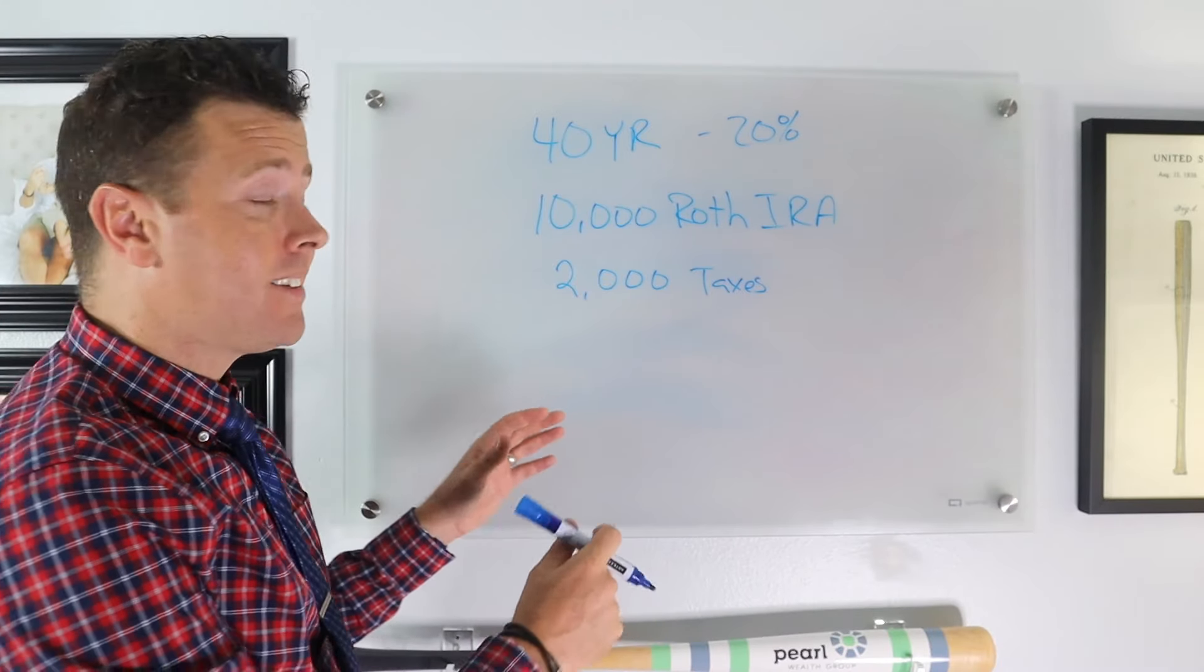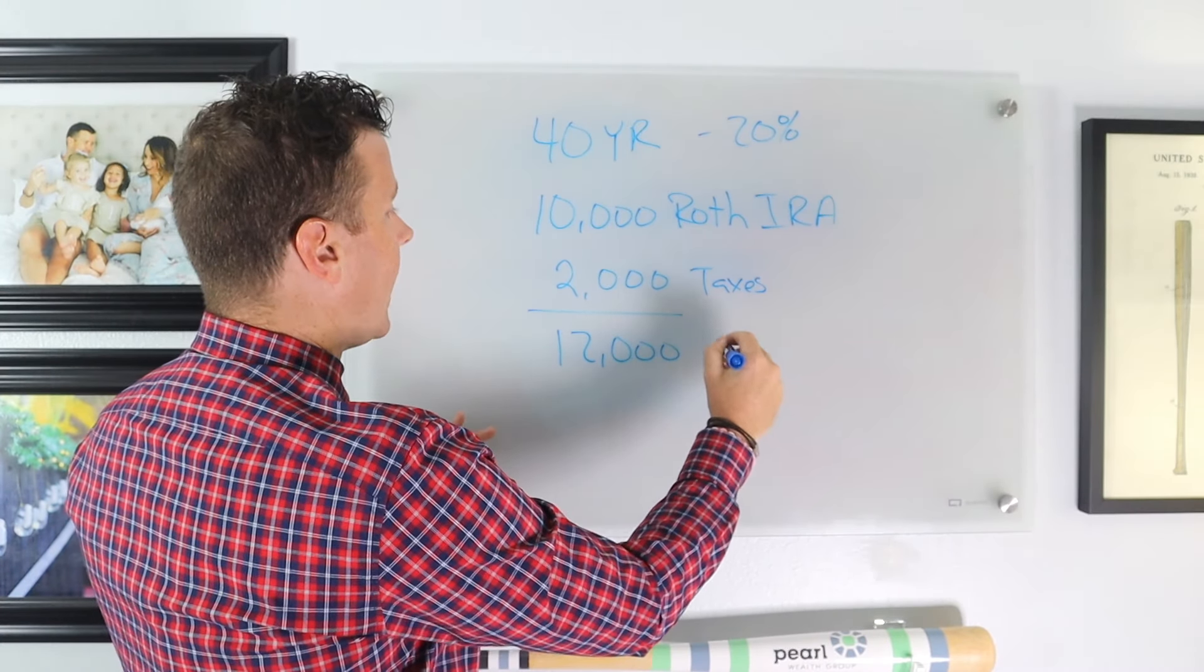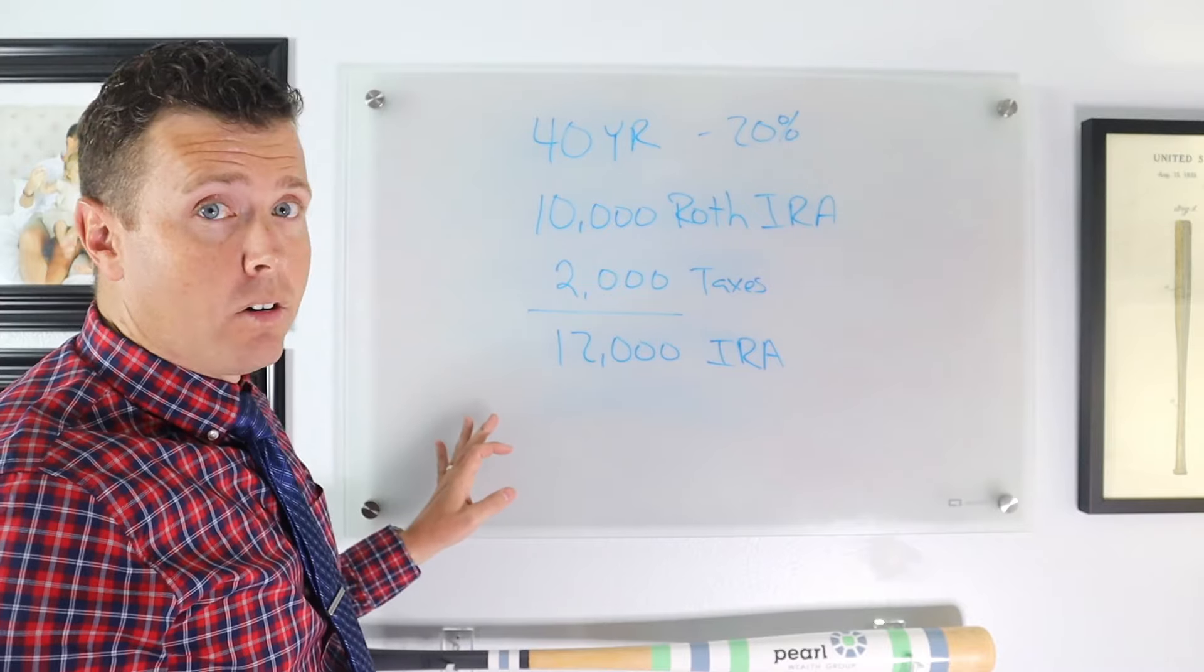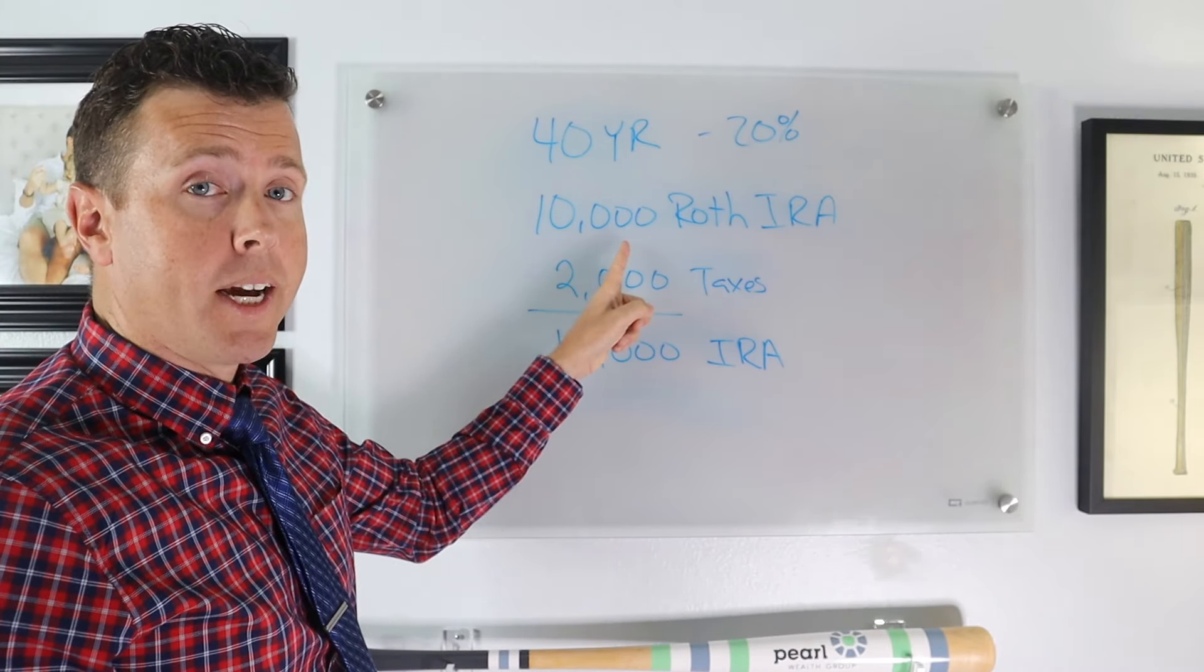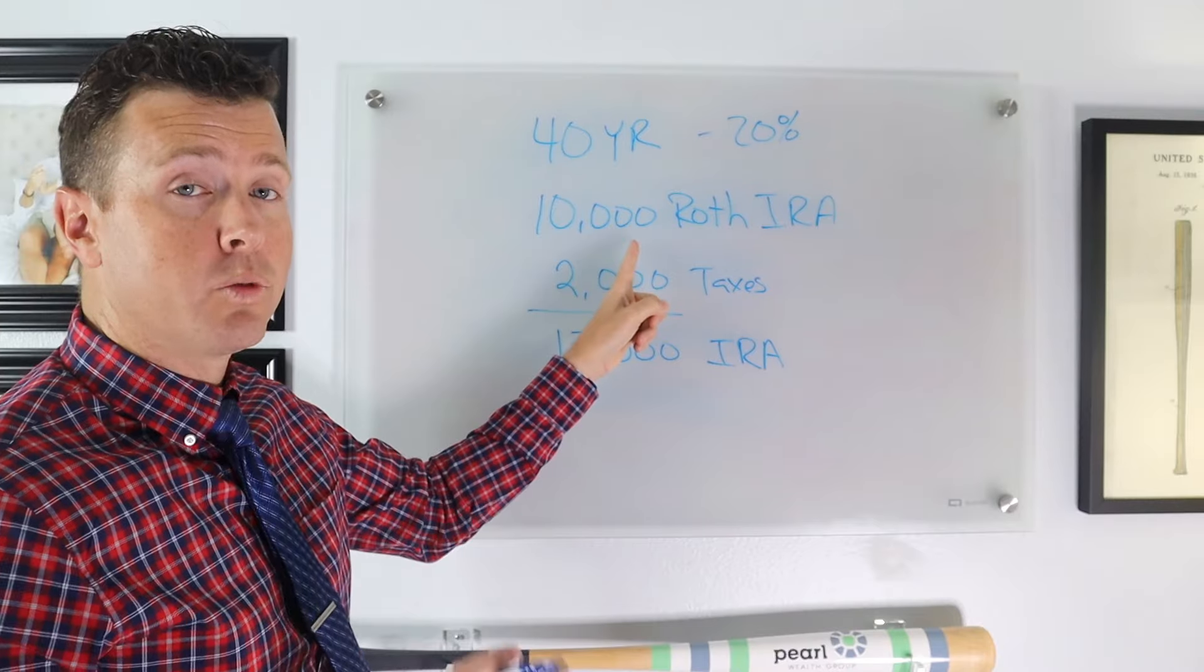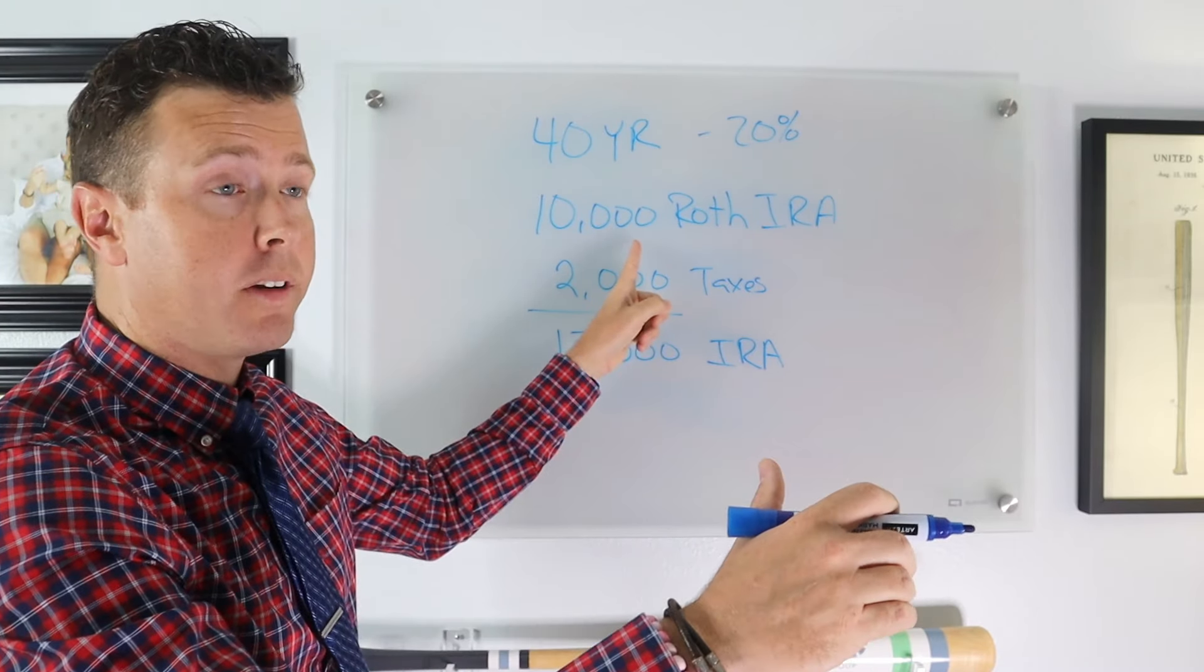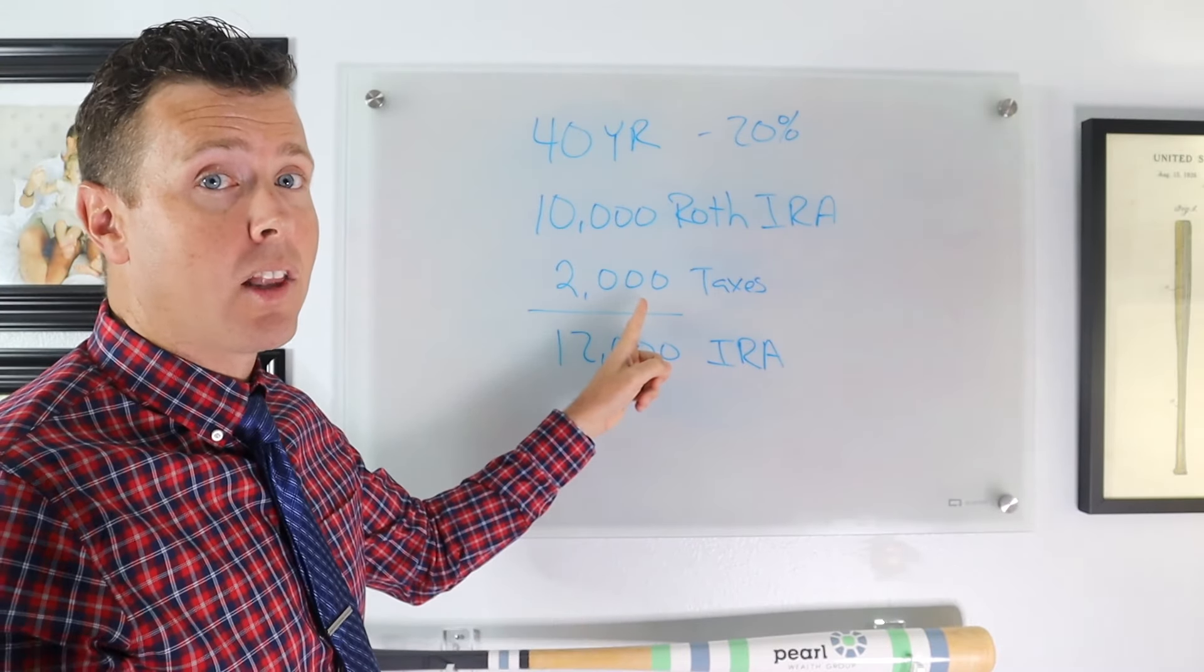So if he does that, essentially he's taken $12,000 out of his IRA. So now instead of just being taxed on $10,000 coming out of his IRA to his Roth IRA, now he's taxed on $12,000, 10,000 of which went into his IRA for investments for his retirement, $2,000 of which went to the IRS. He basically lost that money.